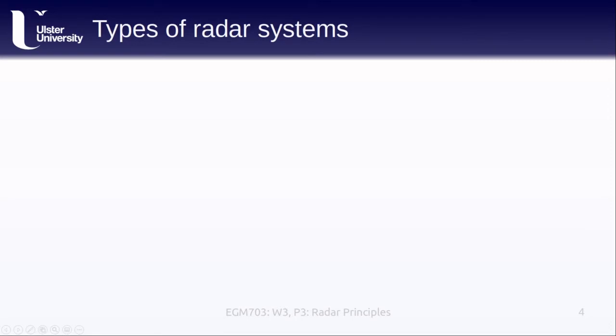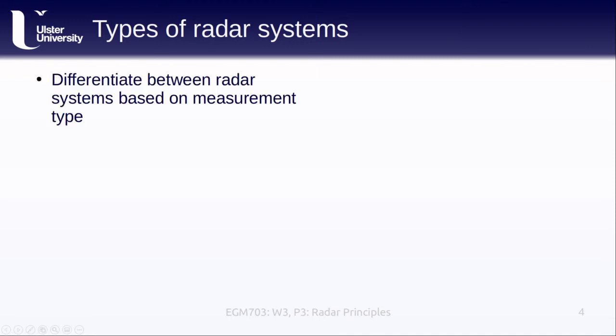We can differentiate between the different types of radar systems that we use for remote sensing based on the kind of measurement that they take. Non-imaging radar systems can be broken into two categories.